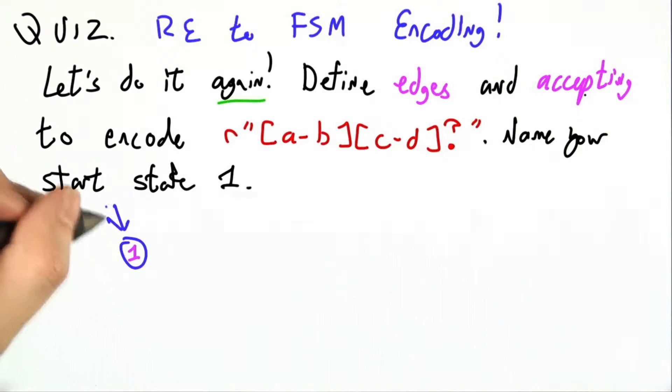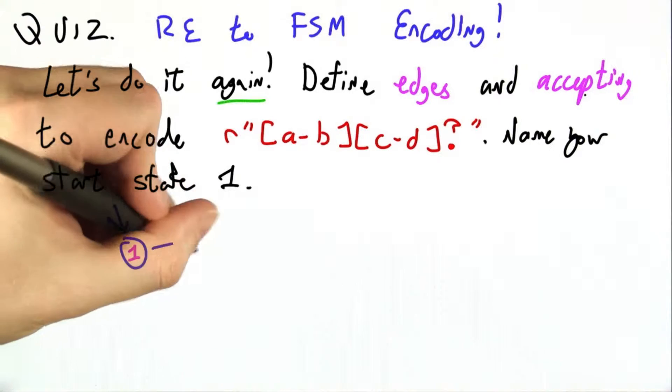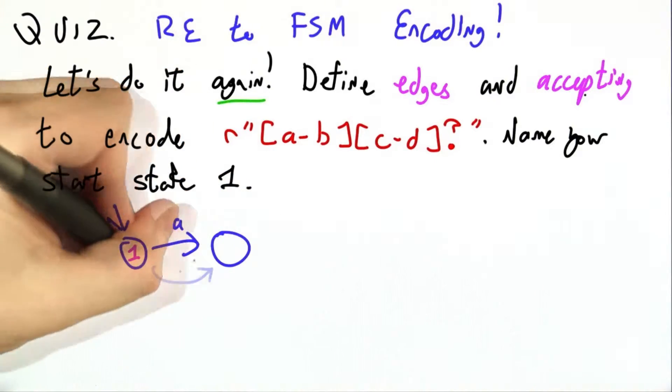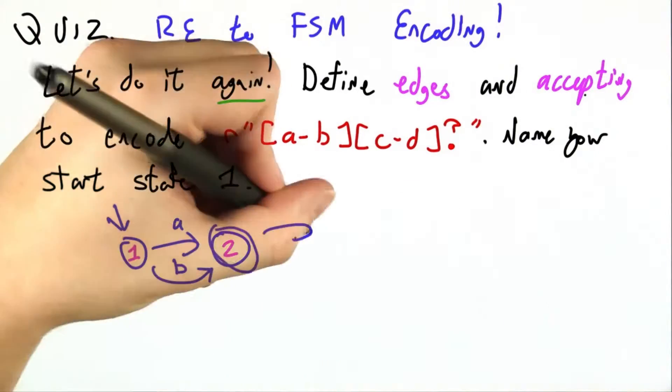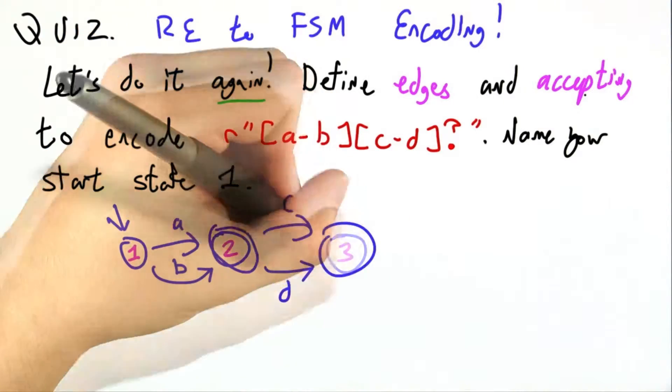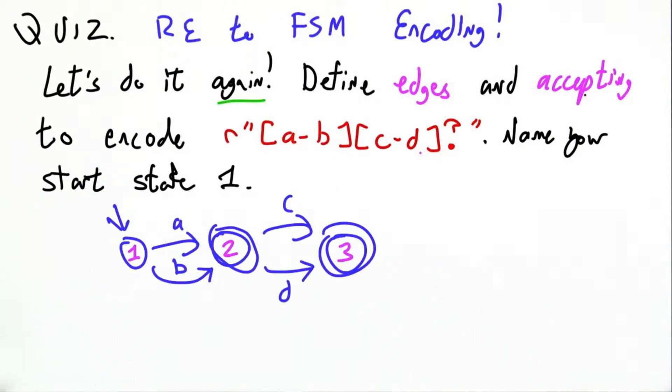Once again, I recommend getting started by drawing the finite state machine. So on A or on B, we go over to state 2. And we could end there because this is optional. Or on C or D, we could go to state 3 and end there.